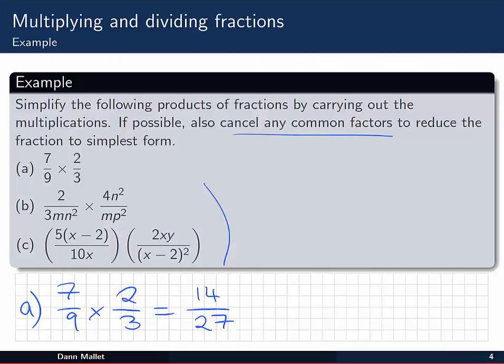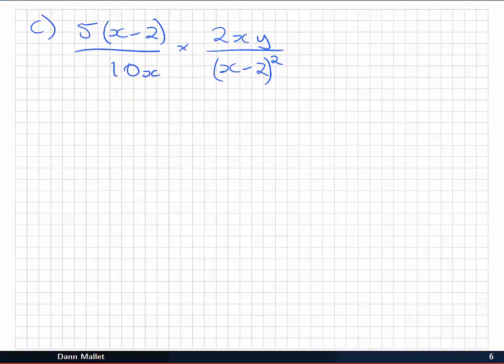Part c is a bit longer again. If you haven't had a go yourself, maybe pause now and have a go at that one. Okay. So we have (5x - 2)/10x multiplied by 2xy over (x - 2)².